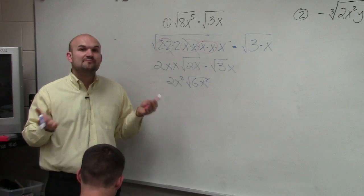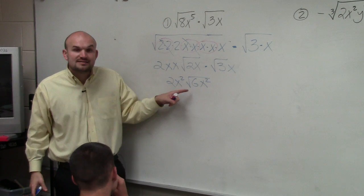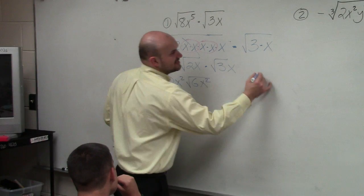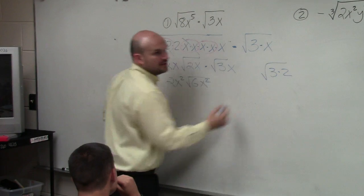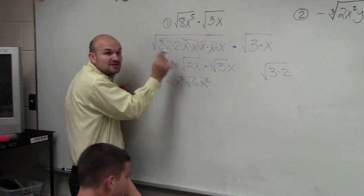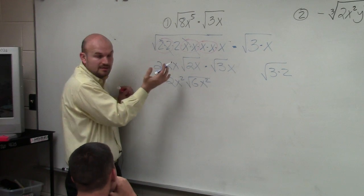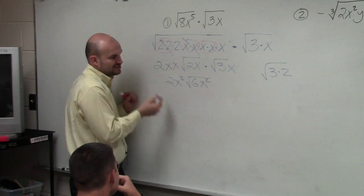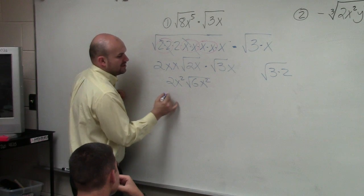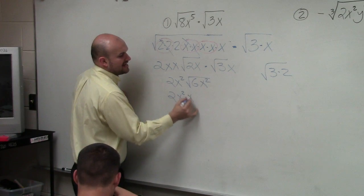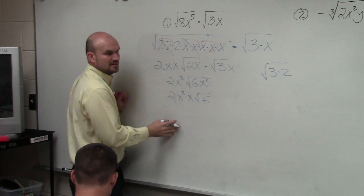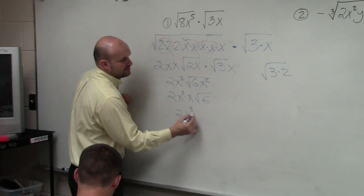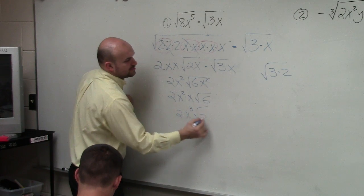Since we've multiplied, we have another opportunity to simplify again. I can't simplify the square root of 6 — breaking it down gives just 3 times 2, and you need pairs of numbers to simplify a square root. But I can take the square root of x squared, which is just x. So I have 2x squared times x times the square root of 6, and x squared times x gives us 2x cubed times the square root of 6.